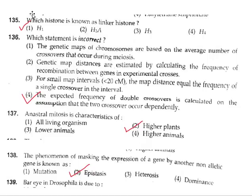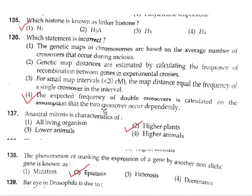Question 135: The histone known as linker histone is H1. Option 1. Question 136: Which statement is incorrect? Option 4 — the expected frequency of double crossover is calculated on the assumption that two crossovers occur dependently — is incorrect.